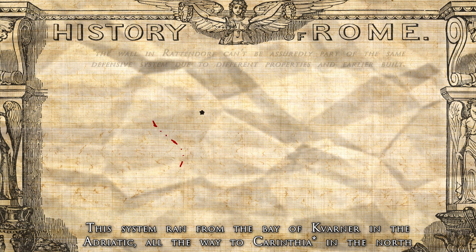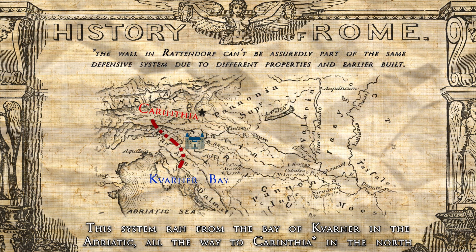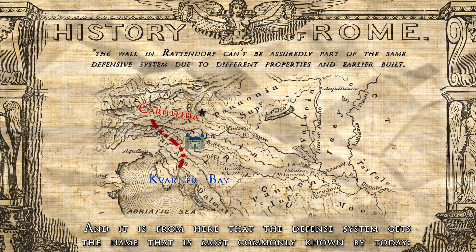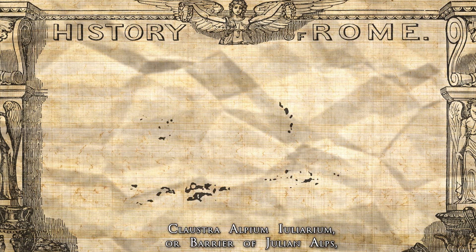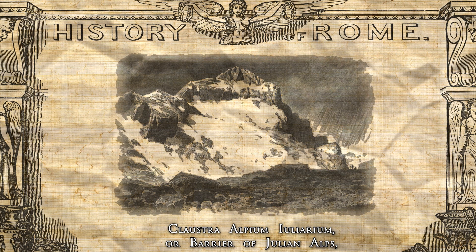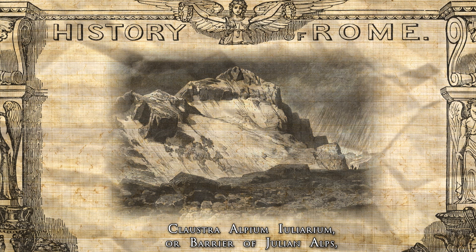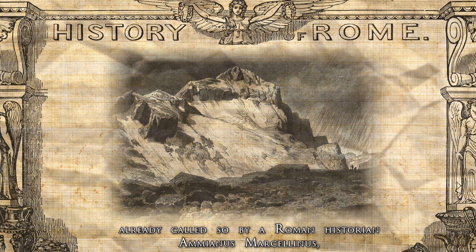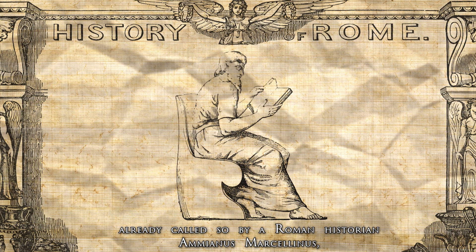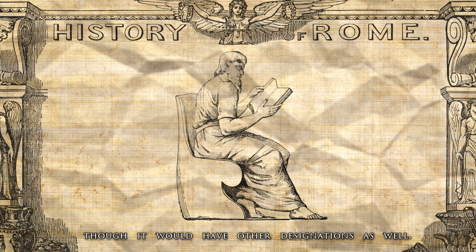This system ran from the Bay of Quarnere in the Adriatic all the way to Carinthia in the north, and it is from here that the defense system gets the name most commonly known by today: Claustra Alpium Iuliarium, or Barrier of Julian Alps, already called so by Roman historian Ammianus Marcellinus, though it would have other designations as well.